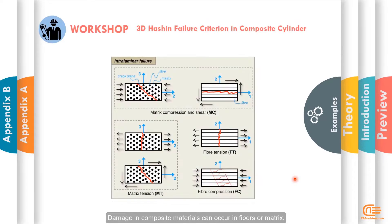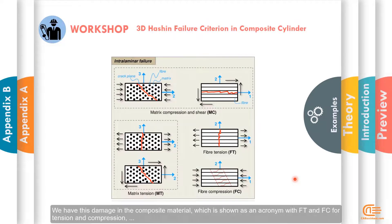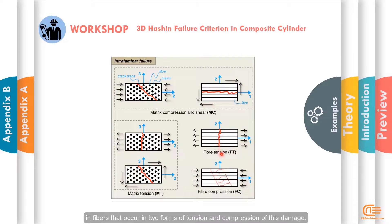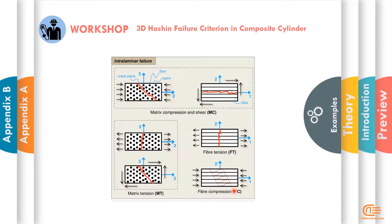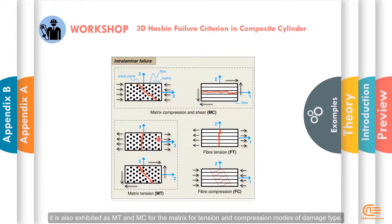Damage in composite materials can occur in fibers or matrix. This damage in the composite material is shown as an acronym with FT and FC for tension and compression in fibers, occurring in two forms. When we are under tensile and compressive load, it is also exhibited as MT and MC for the matrix, for tension and compression modes of damage type.